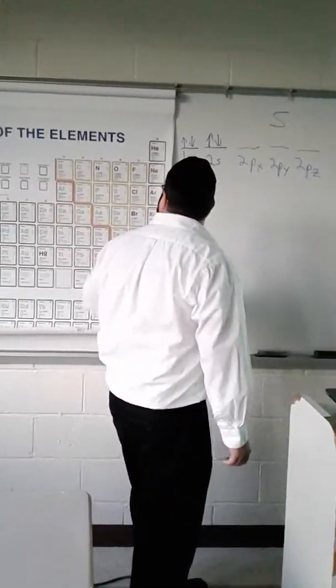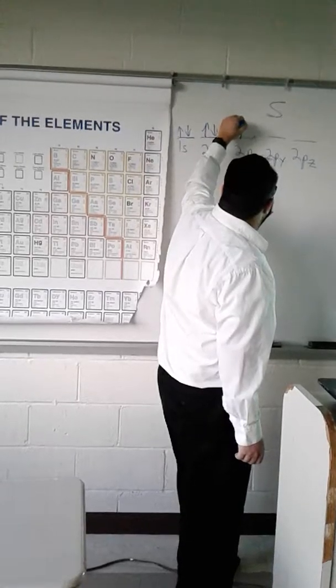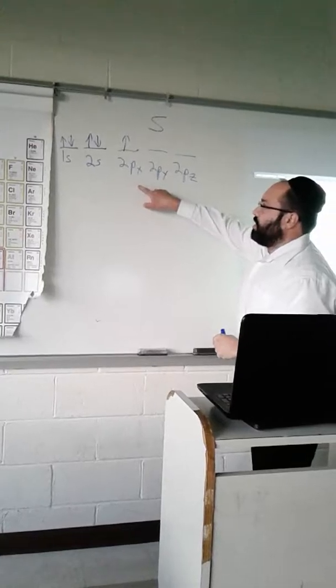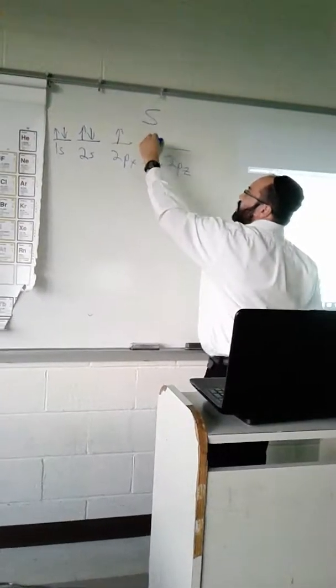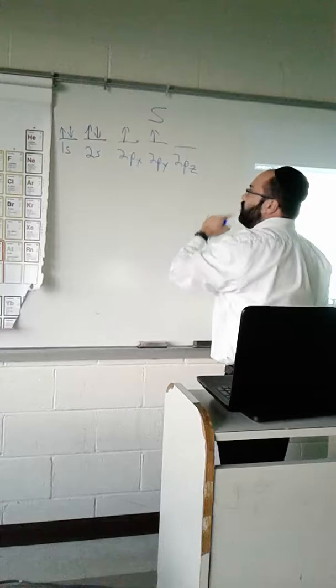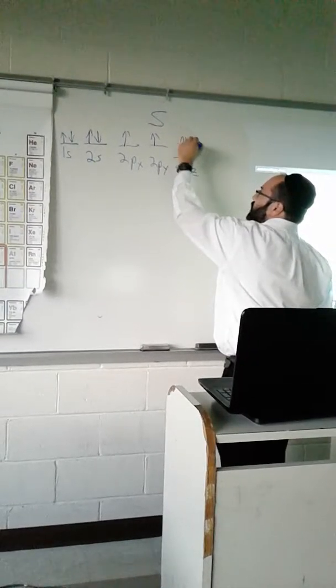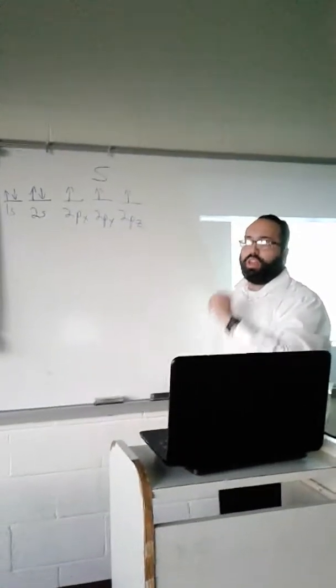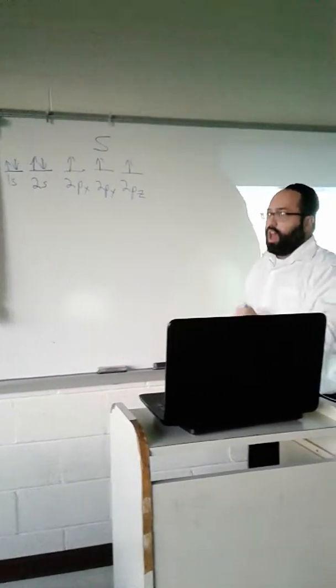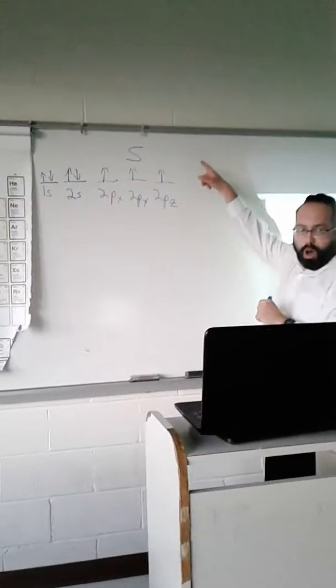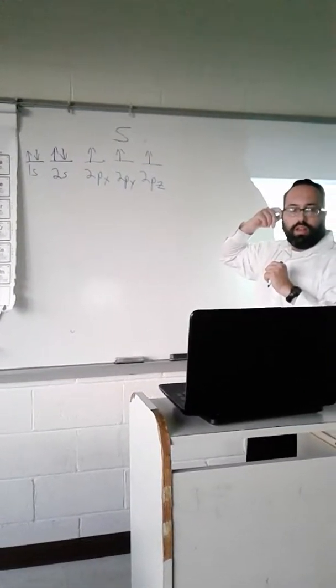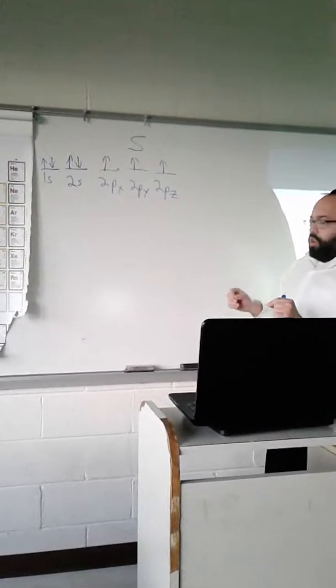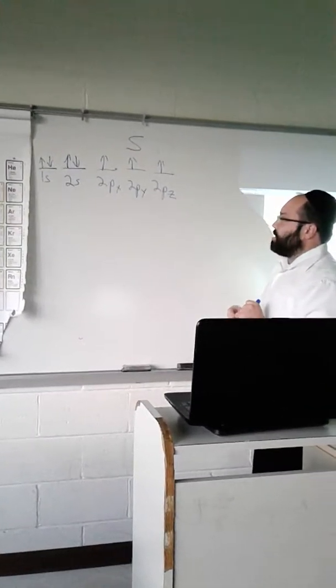Now, I'm in the p block with boron. So boron is going to get an up arrow. Now, remember, instead of pairing anything, I'm going to singly fill them, so when I go to carbon, I go like this, and when I go to nitrogen, I go like this. But it could be any way, as long as the arrows point in the same direction. I can do all of them down, or all of them up. After the s, all the p's need to be filled individually, singularly, with the same direction.